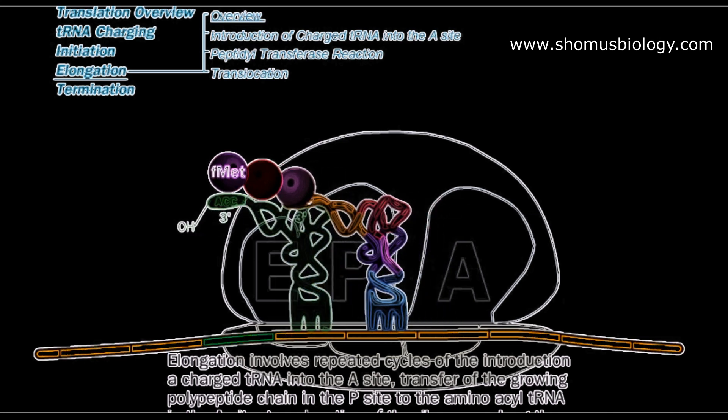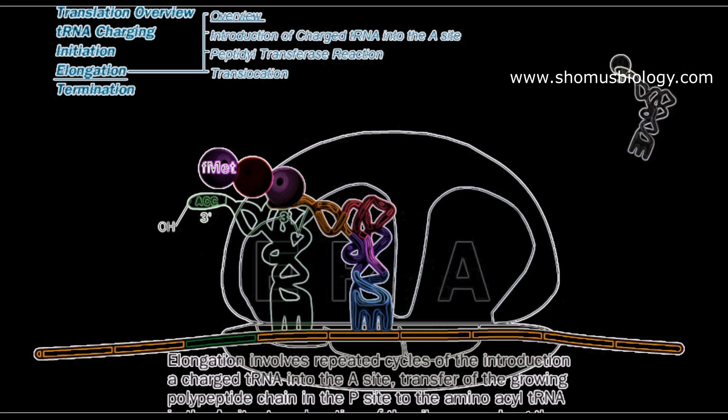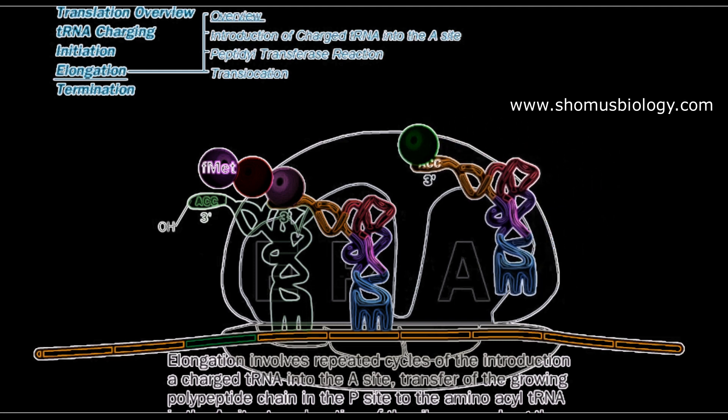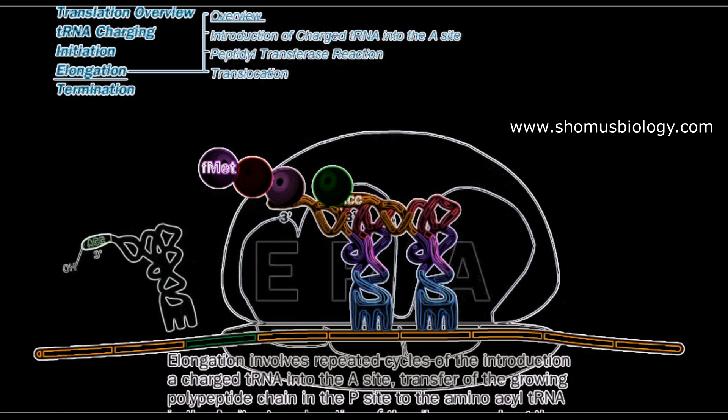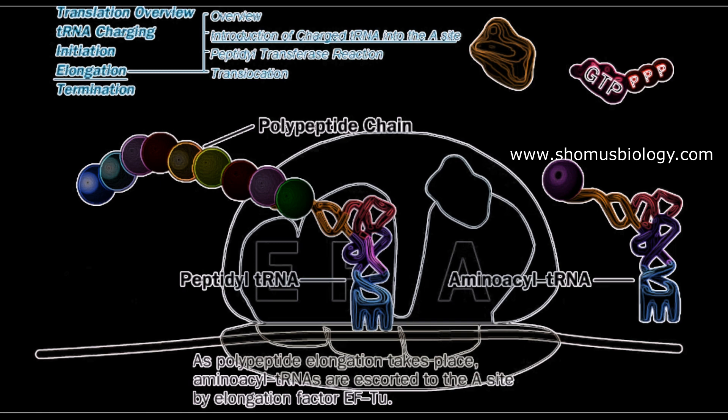So everything in P-site becomes E, everything in A-site transferred to P-site, and A-site becomes free again. So another amino acid carrying tRNA comes to bind to the A-site and again the process continues: formation of peptide bonds and again sliding of ribosome one unit.